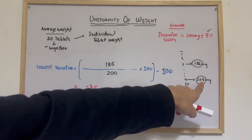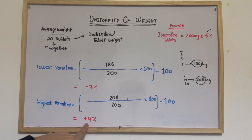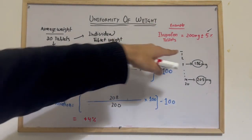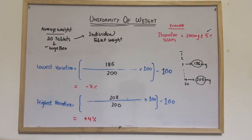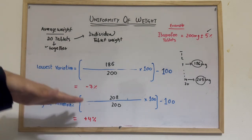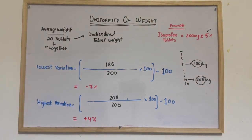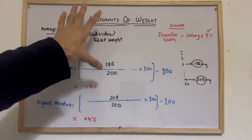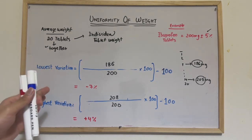In a similar manner, for the highest weight of 208 mg: divided by average weight, multiplied by 100, minus 100 gives plus four percent. The lowest variation is minus seven percent, which is outside our limit of plus or minus five percent. So this tablet fails, and we report accordingly that the tablet weight is not within specification. Using this formula you can check uniformity of weight for any tablet. If you have any questions, ask in the comment section.